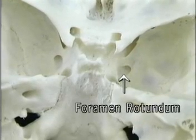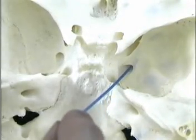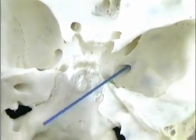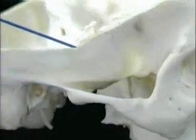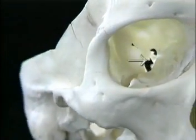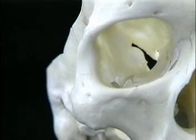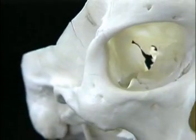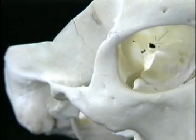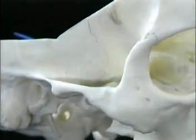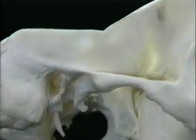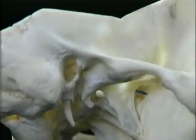Below and behind the medial end of the superior orbital fissure, this smaller round opening, the foramen rotundum, is for the maxillary branch of the trigeminal nerve. We'll put this pointer in the foramen rotundum and go round to the outside. Here's the superior orbital fissure again, and medial to it is the optic canal. The foramen rotundum emerges not into the orbit, but into the pterygomaxillary fissure.